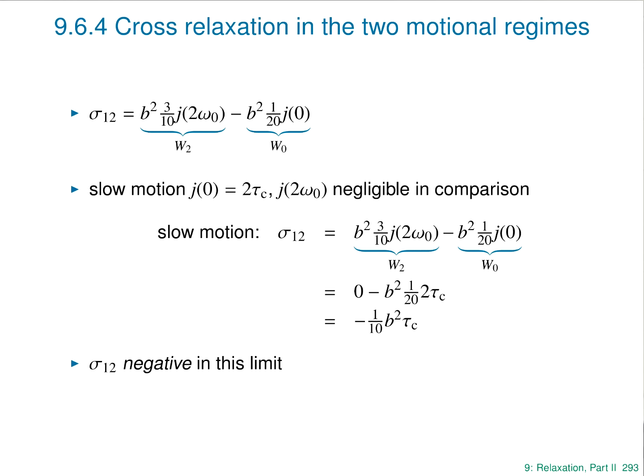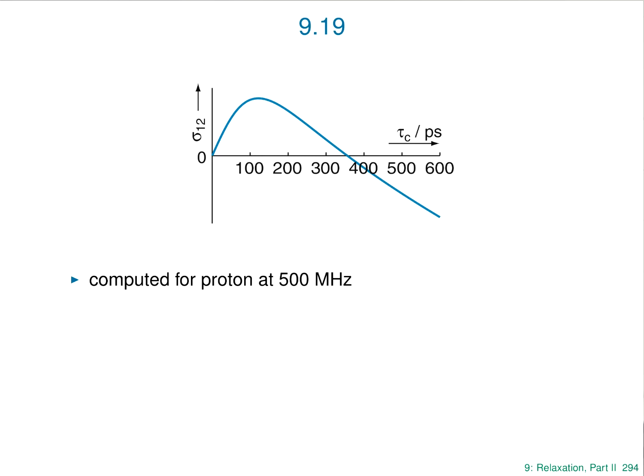So the cross-relaxation rate constant is positive in the fast motion limit and negative in the slow motion limit — it goes through zero somewhere in between. If you calculate it fully at a Larmor frequency of 500 MHz, sigma starts positive, increases to a maximum, then goes through zero and becomes negative. The crossover occurs when ω0τC = √(5/4), which at 500 MHz corresponds to a correlation time of about 360 picoseconds — a medium to large molecule. Positive for small molecules, negative for large molecules.